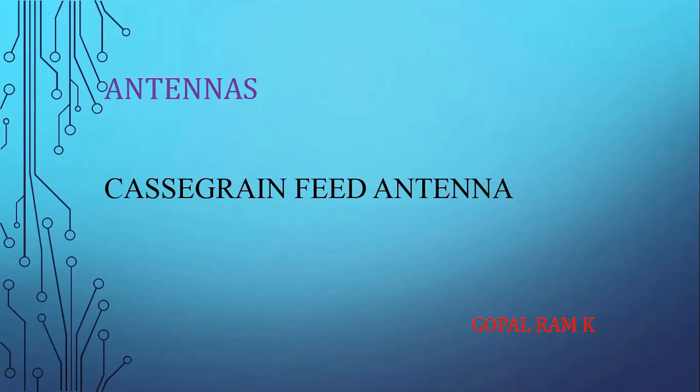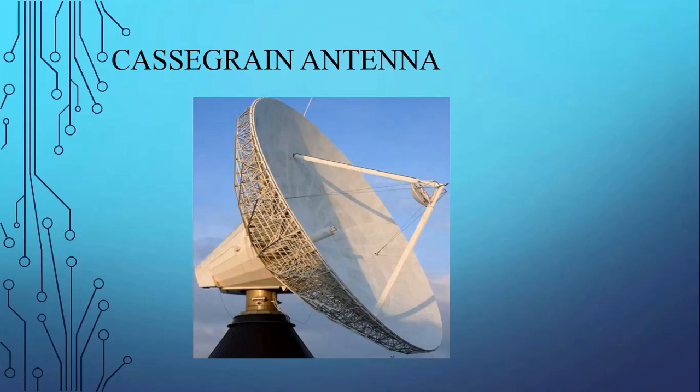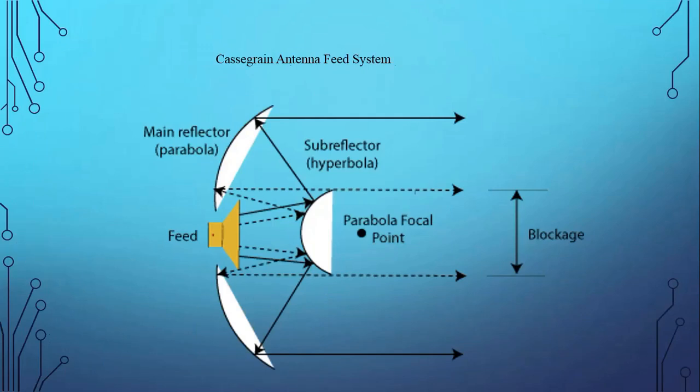Dear students, I hope all are well. Here I am going to explain about the Cassegrain feed antenna. It comes under antenna theory. This is the picture of a Cassegrain feed antenna — it consists of two reflector plates. Such type of antennas are mostly used in satellite ground stations, radio telescopes, and communication satellites.